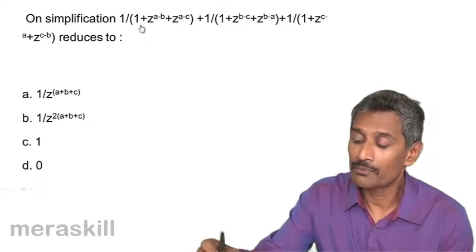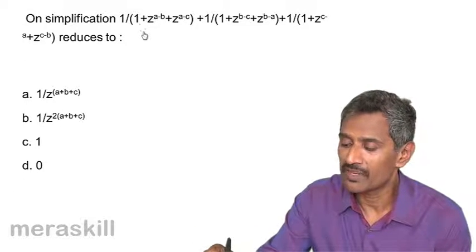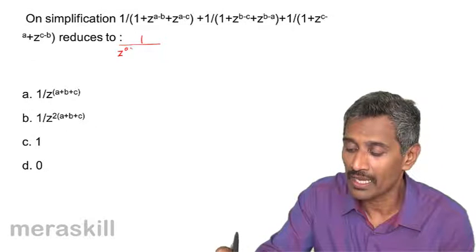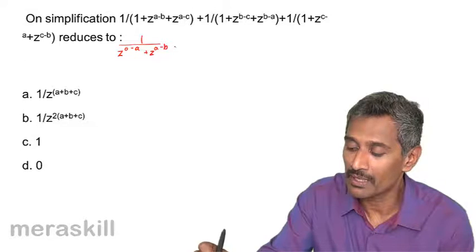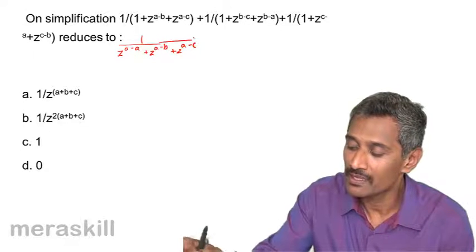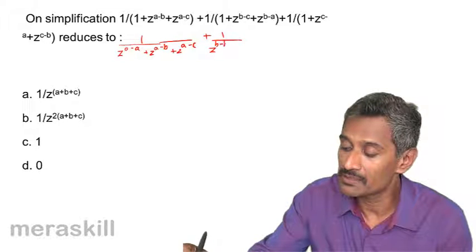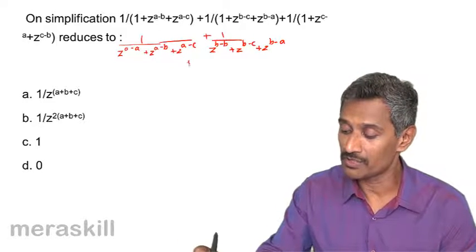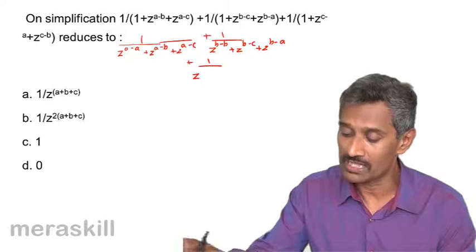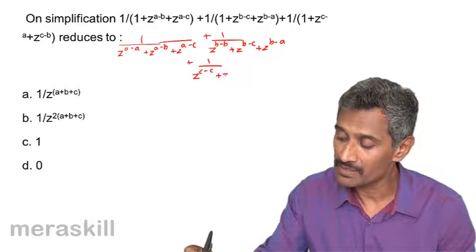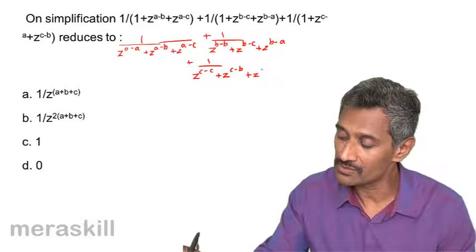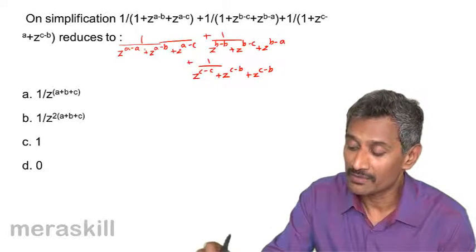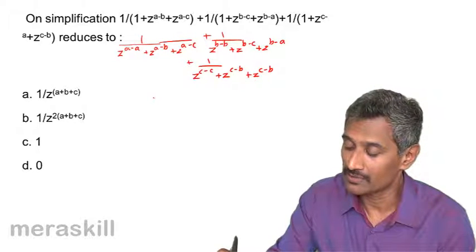This is 1 upon 1 plus z raised to a minus b — we had done a sum similar to this. As a reminder, we write the first term as z raised to a minus a, and this one as z raised to a minus b plus z raised to a minus c. Similarly, 1 upon z raised to b minus b plus z raised to b minus c plus z raised to b minus a. Taking z raised to b as common factor, terms get cancelled and the answer is 1.